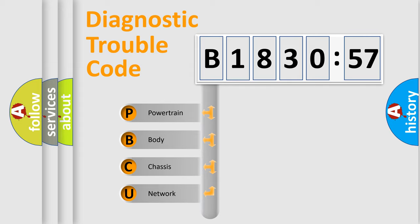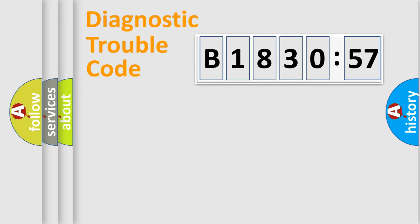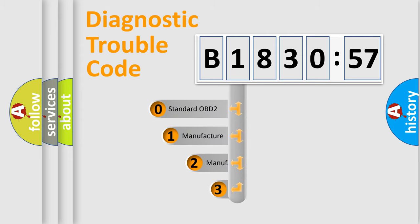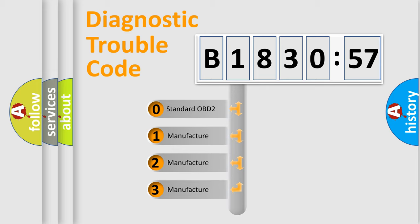We divide the electric system of automobiles into four basic units: Powertrain, Body, Chassis, and Network. This distribution is defined in the first character code.